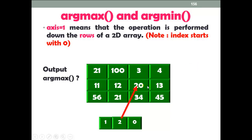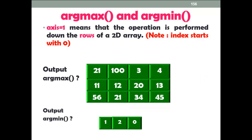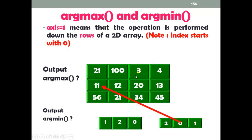The maximum value of row 1 is at index 2, and the maximum value of row 2 is at index 0. For argmin with axis equal to 1, the output is also 3 values because there are 3 rows. The minimum value is at index 2 of row 0, at index 0 of row 1, and at index 1 of row 2.